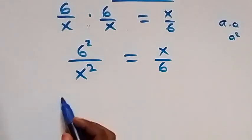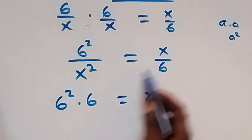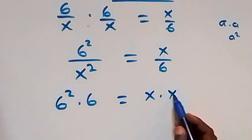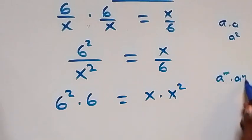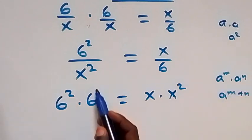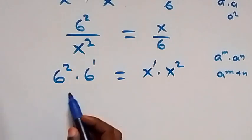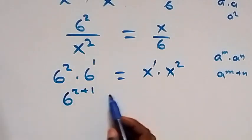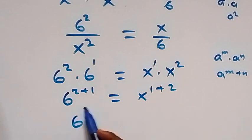Next, we cross multiply to get 6 squared times 6 equals x times x squared. Using the exponent rule that a^m times a^n equals a^(m+n), we get 6^(2+1) equals x^(1+2), which simplifies to 6³ equals x³.